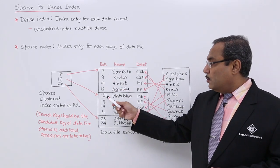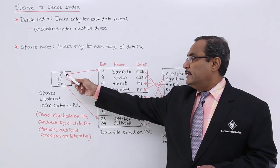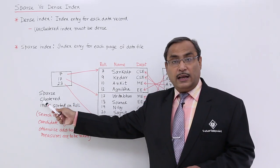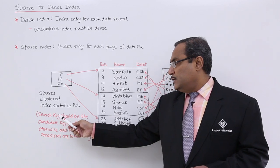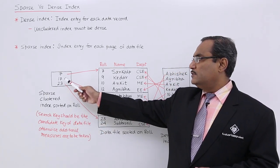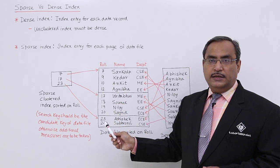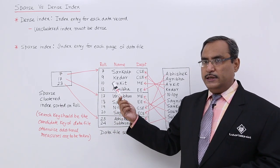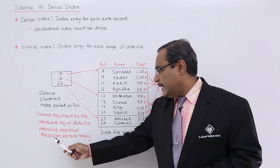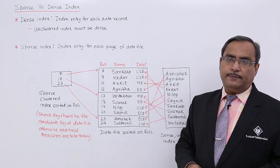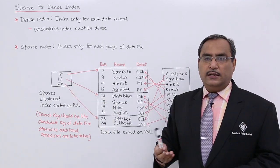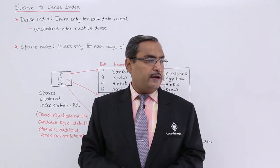As the roll numbers are sorted, the indexing is also sorted — that is why we call it clustered. The search key should be the candidate key of the data file. Here the search key is roll, and roll is the candidate key for this data file. Otherwise, additional measures are to be taken, and it is common practice to make search keys the candidate keys of the data file.